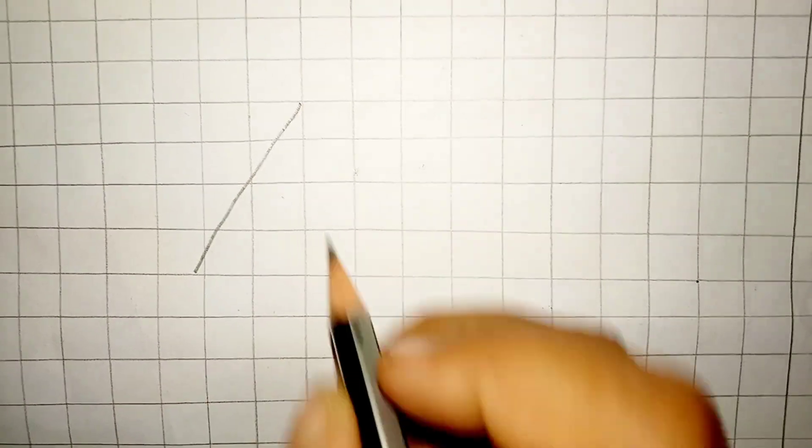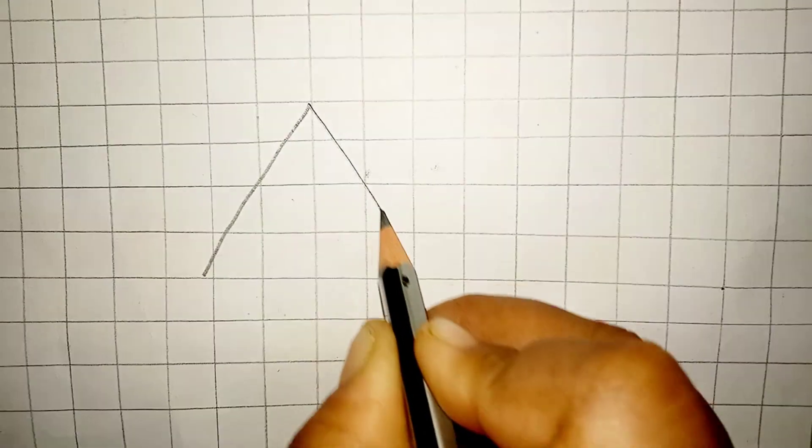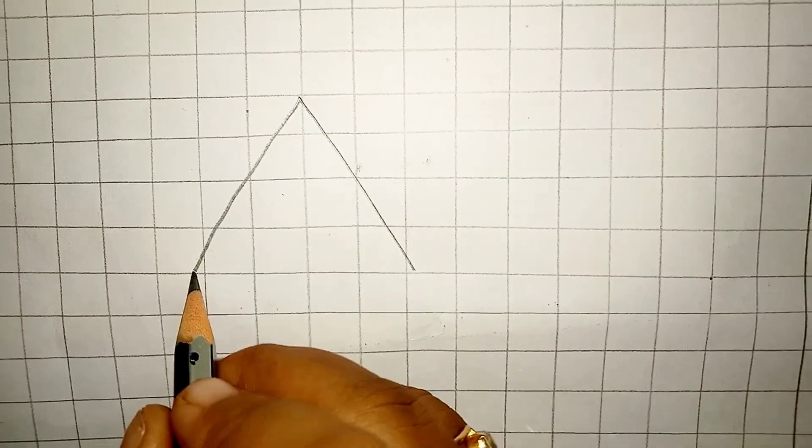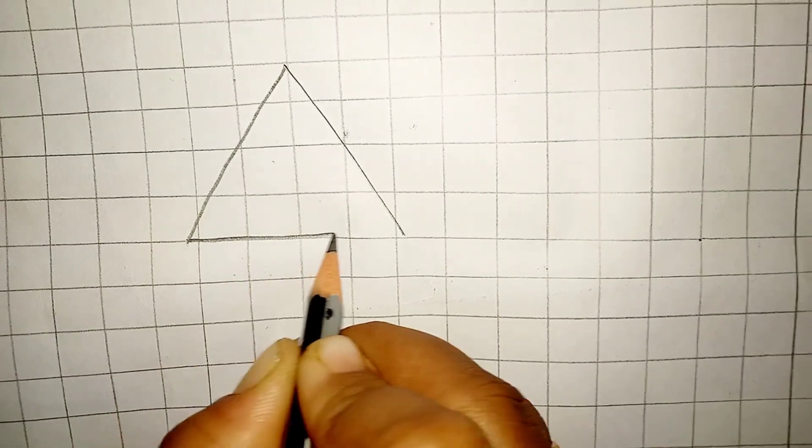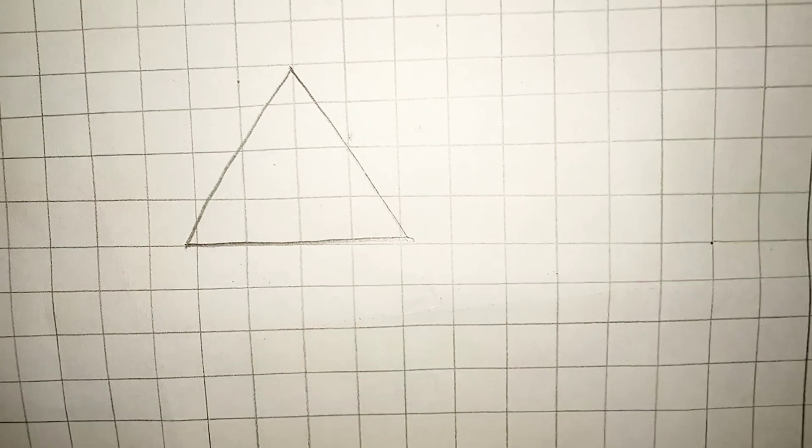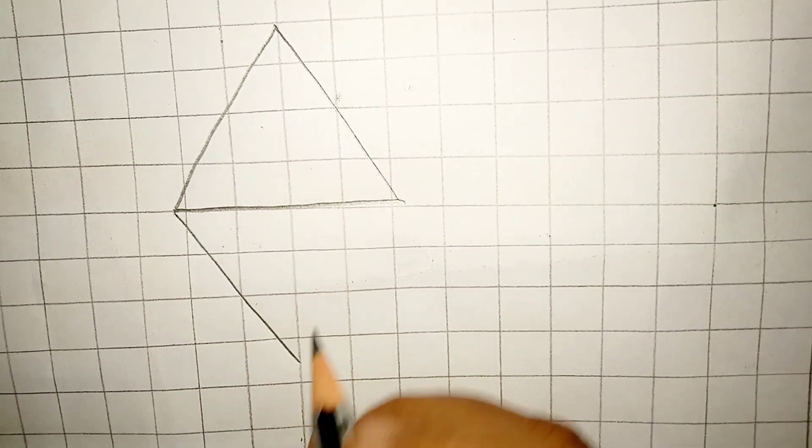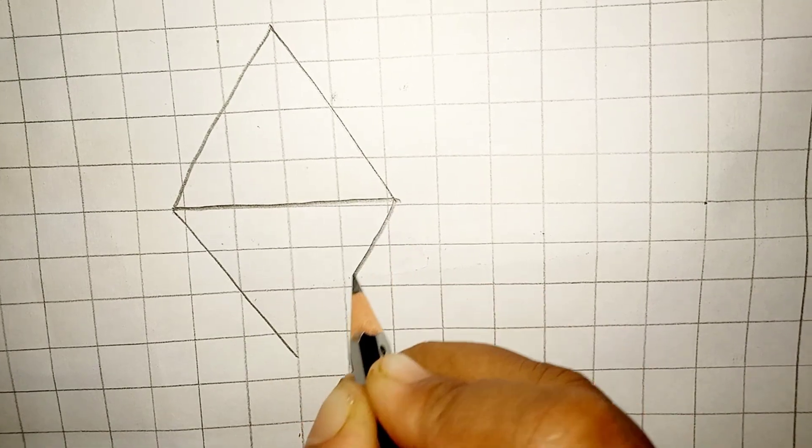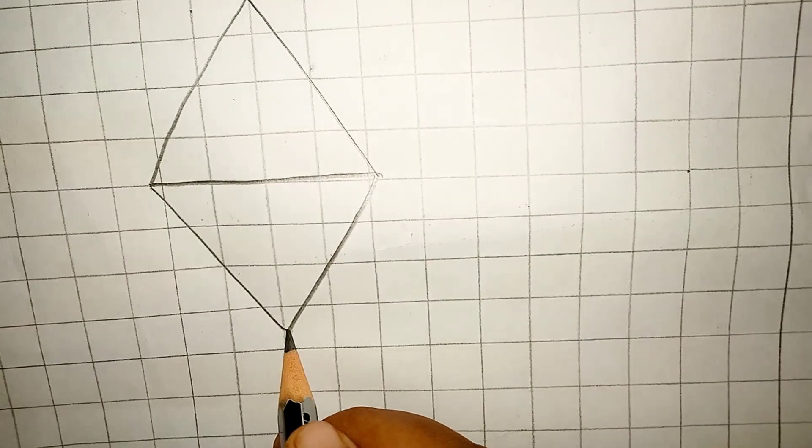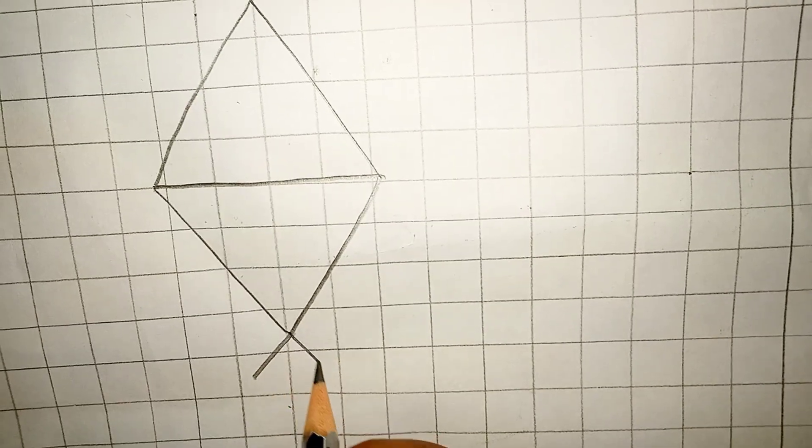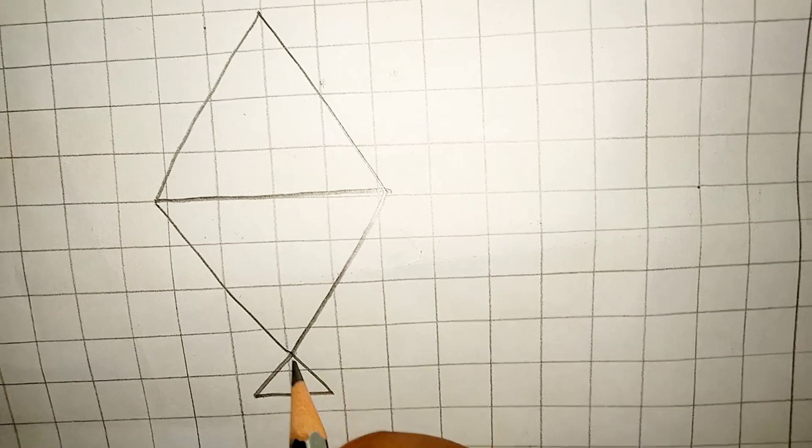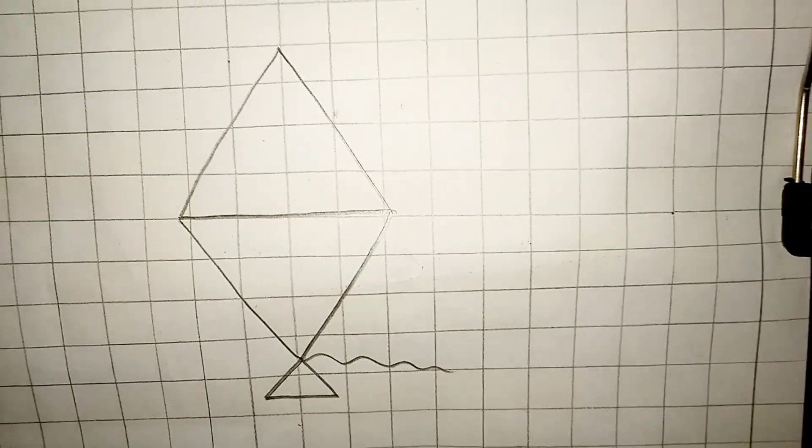Again, we will do a triangle like this. How many triangles? Can you see here? Two. And this is the third one. What is it now? It's a kite.